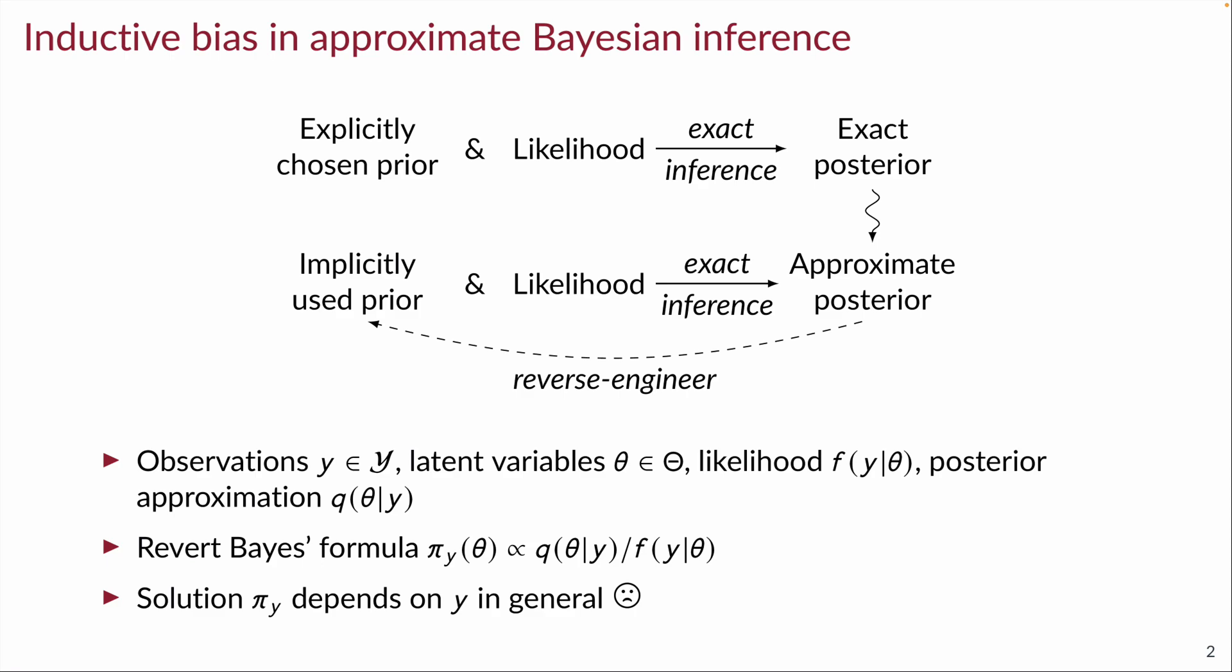However, we want an observation independent distribution so that we can actually think of it as the a priori preference for solutions or the prior. This means we somehow need to compromise between these pi_y.